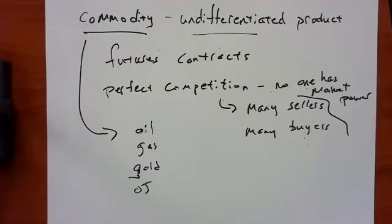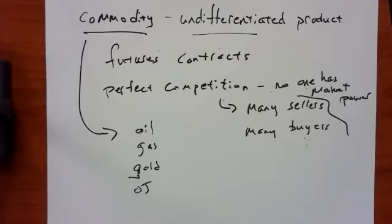If the price of orange juice rises from $1 to $2 a gallon by March, you close out your contract: you send a check for $10,000 and take delivery of something worth $20,000. Most traders don't actually take physical delivery — they immediately sell the orange juice at the spot price to someone like Tropicana and wind up doubling their money. That's the basic idea behind futures trading.